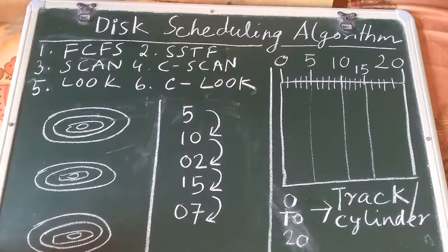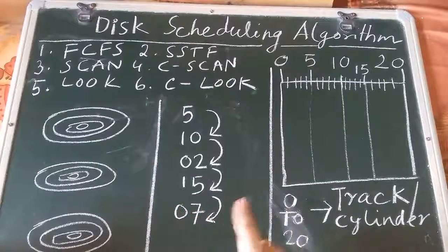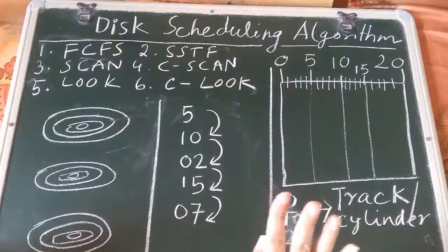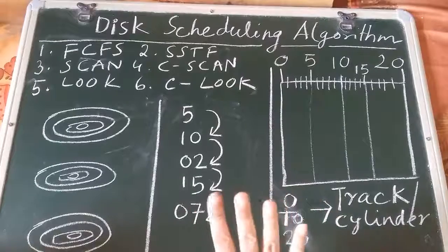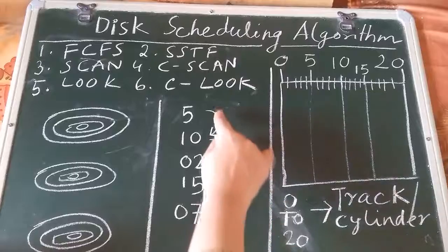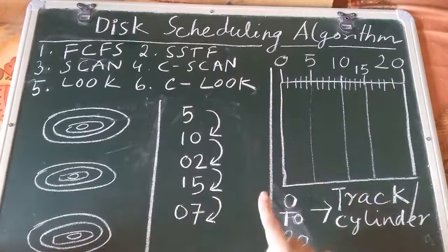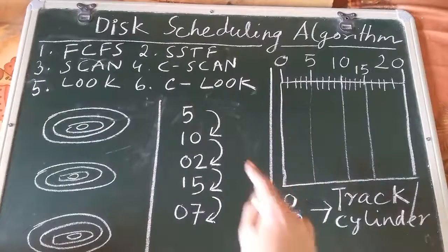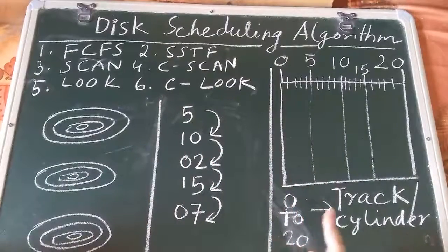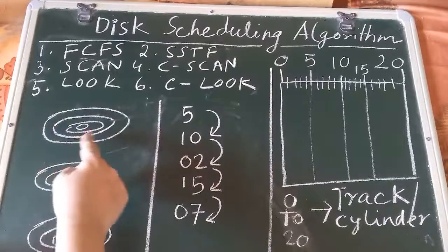Before we start with our first algorithm, FCFS, we want to make some concepts clear. First we'll take one example, then we'll explain what FCFS — first come first serve — means. We have already studied first come first serve in CPU scheduling algorithm, but here we are applying it in a different context: with respect to disk tracks.